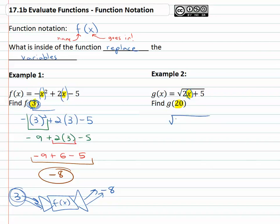So g of x is equal to the square root of 2 times x which is 20 plus 5. Well 2 times 20 is 40, doing our order of operations, plus 5 and finally 40 plus 5 is 45.